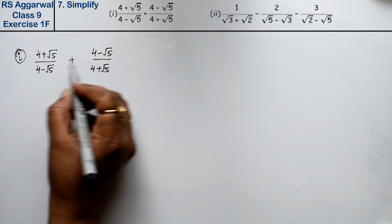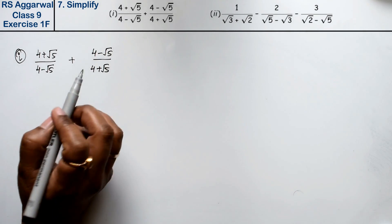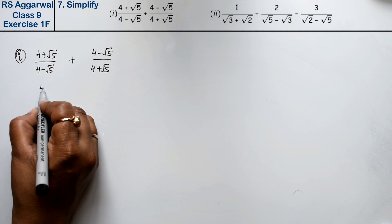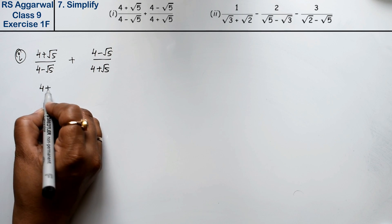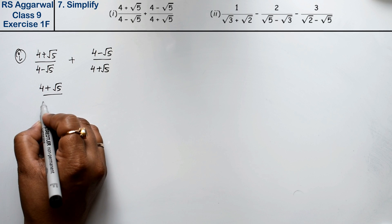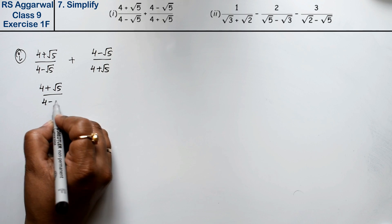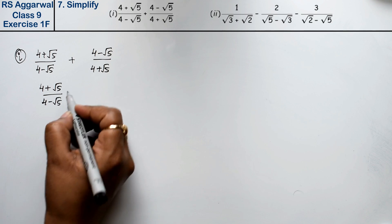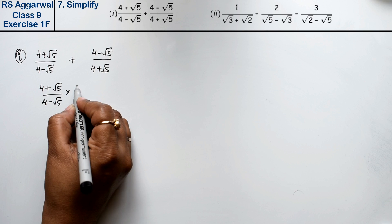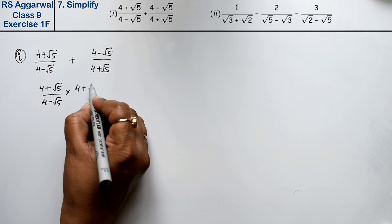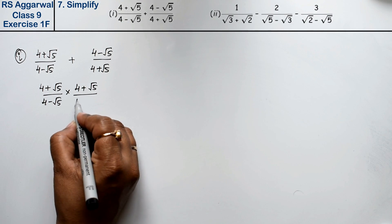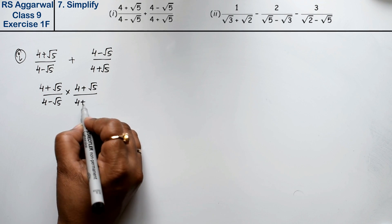We will rationalize both of them. First, I will rationalize (4 + √5)/(4 - √5). Since it has minus √5 in the denominator, we multiply by (4 + √5)/(4 + √5).